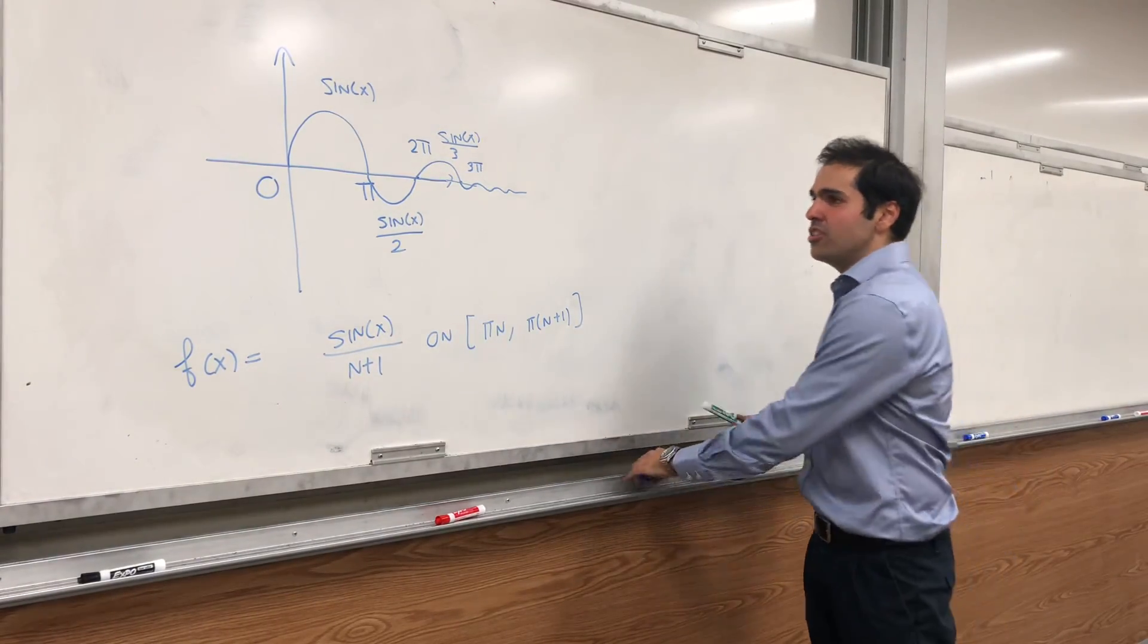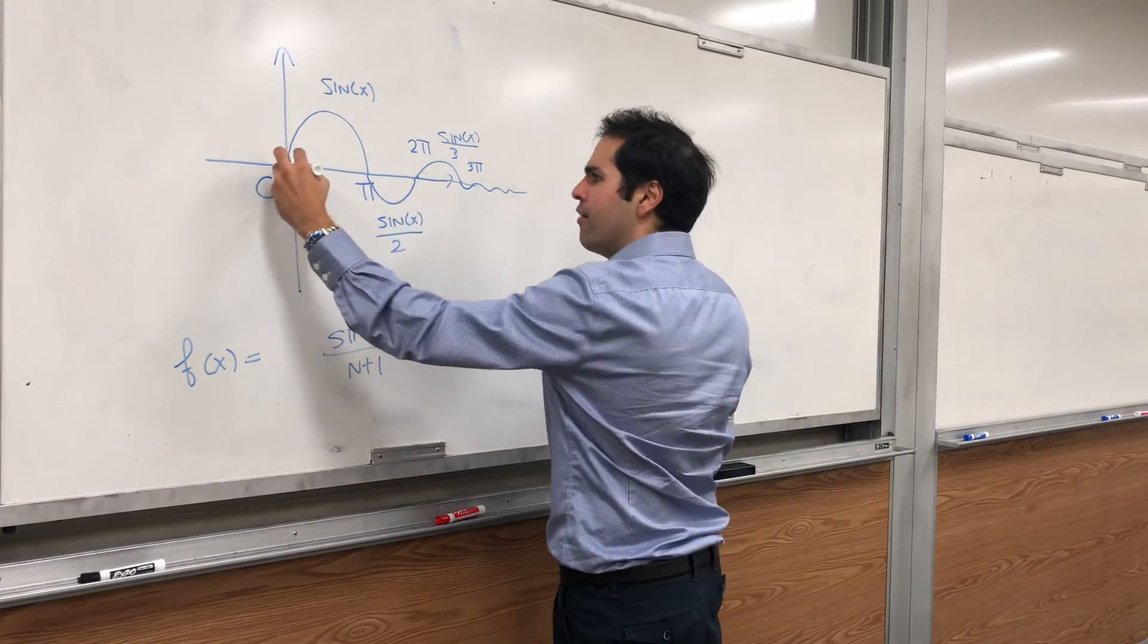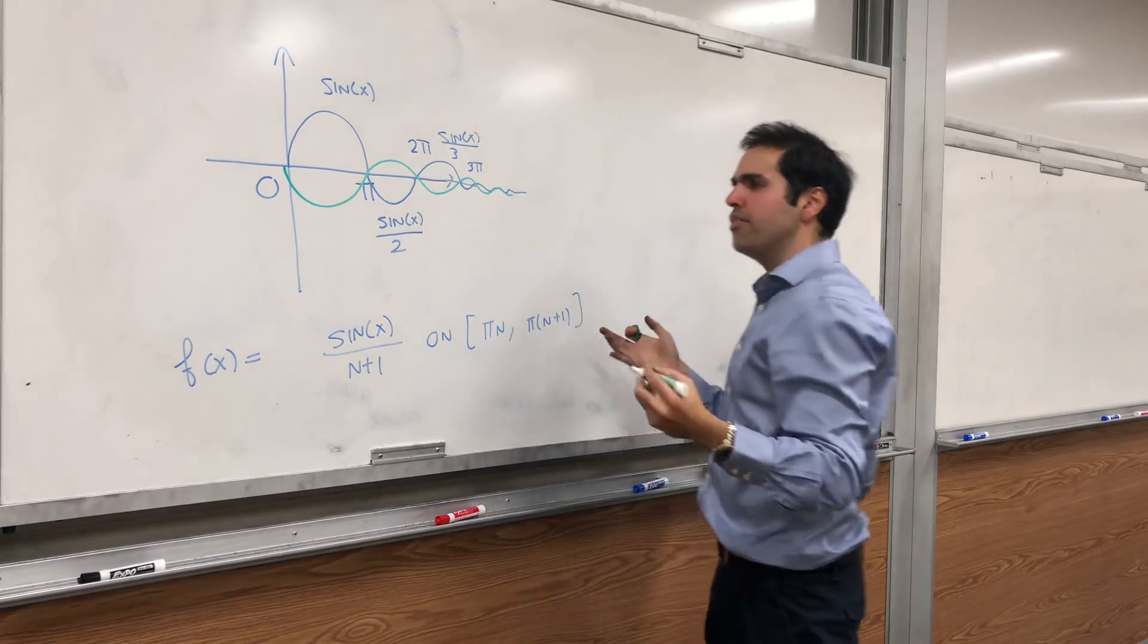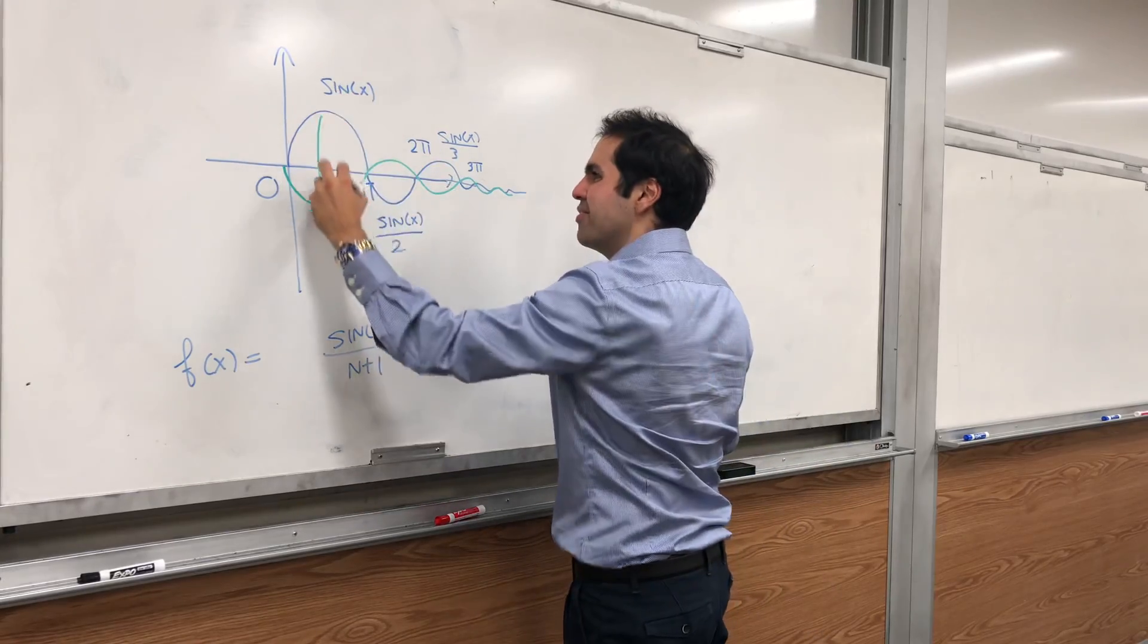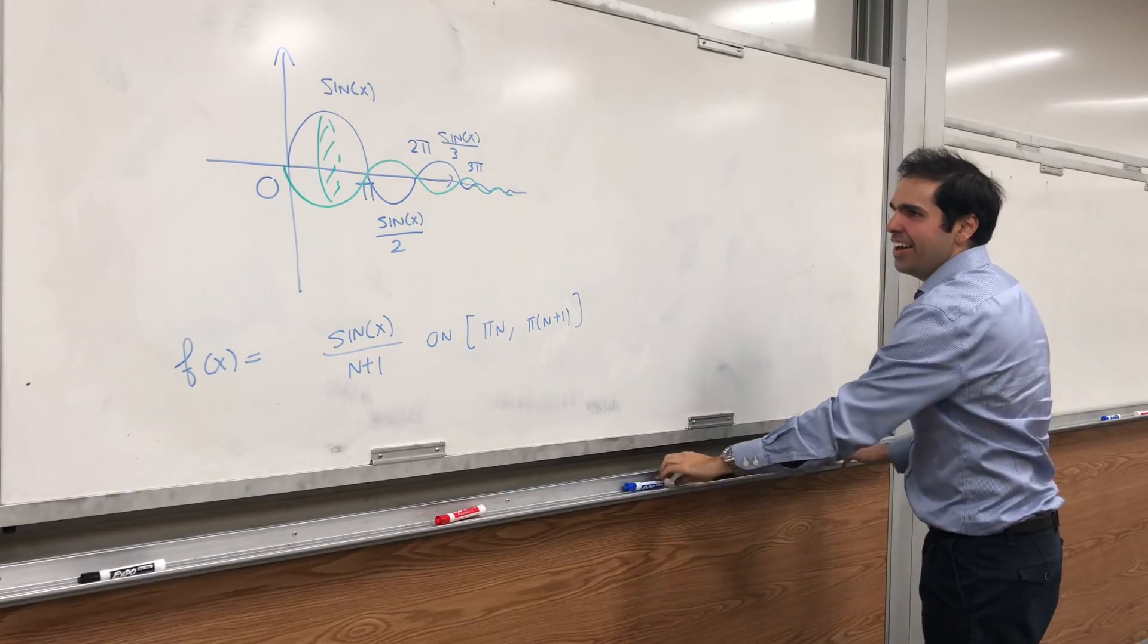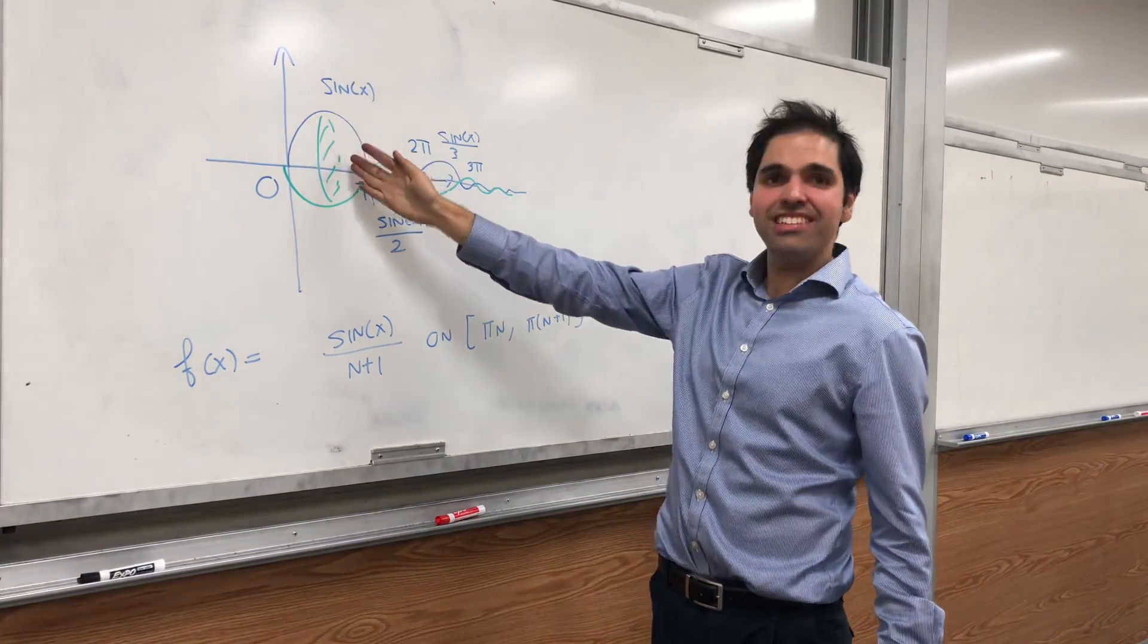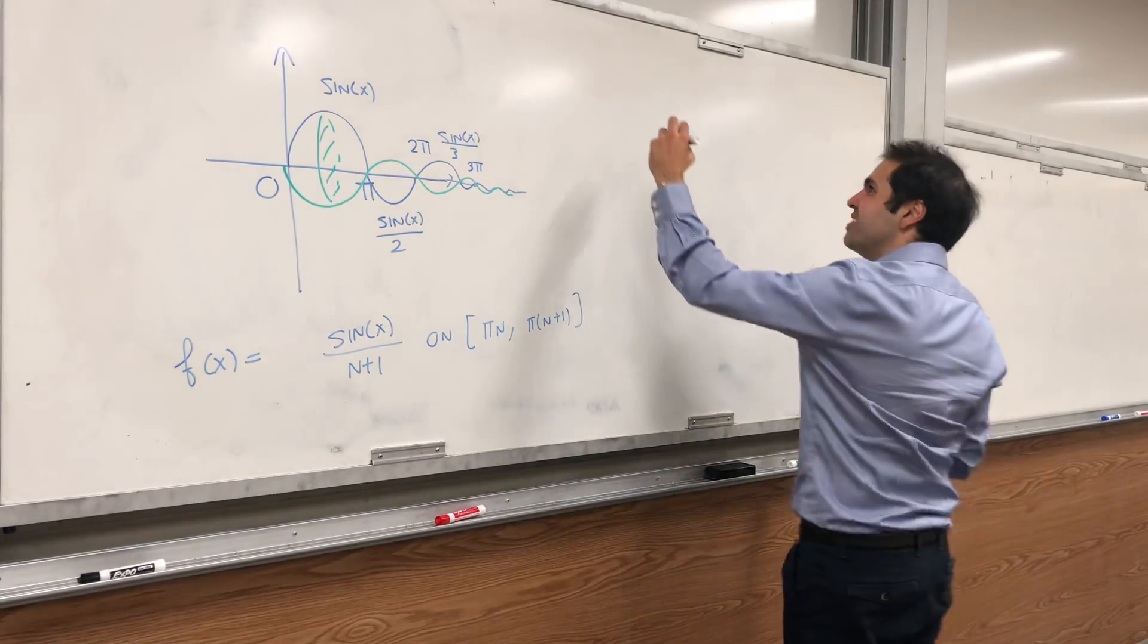And here's the question. Suppose you take this weird function and you revolve it around the x-axis. Then what you get is some sort of a pearl necklace. Notice, the slices here are disks. And therefore, you precisely use the disk method.